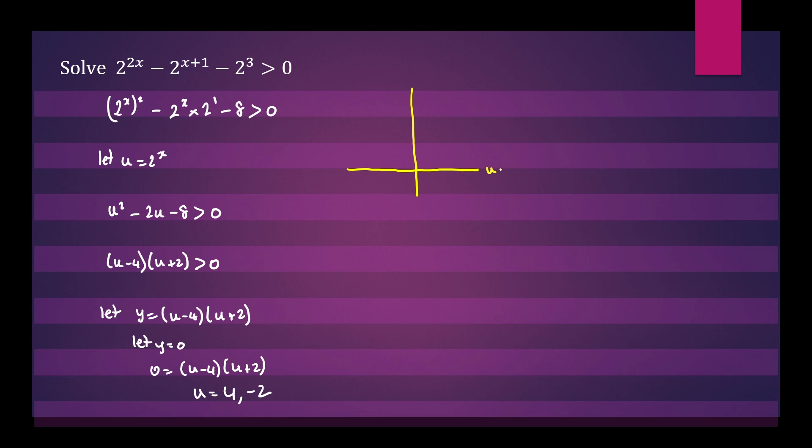This is our x-axis, which we've let equal u, and this is our y-axis. So u = 4: 1, 2, 3, 4. And we have u = -2: -1, -2. This is 4 and this is -2.